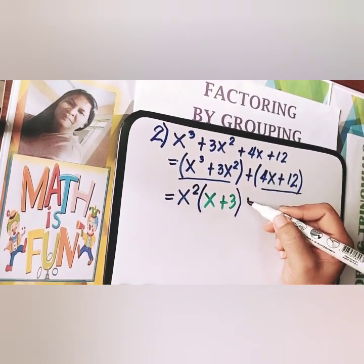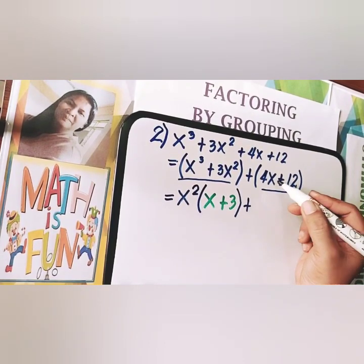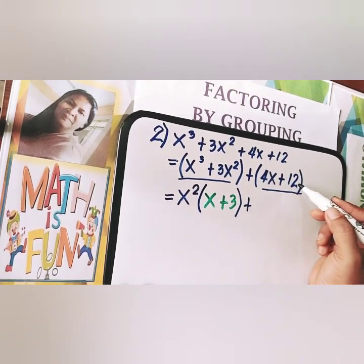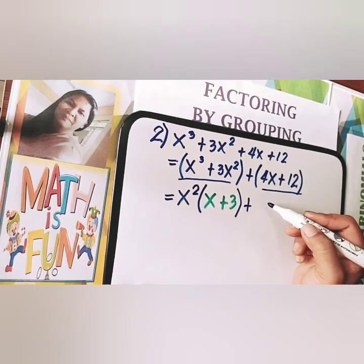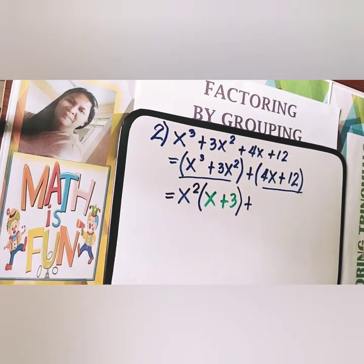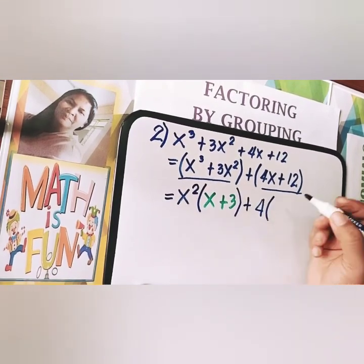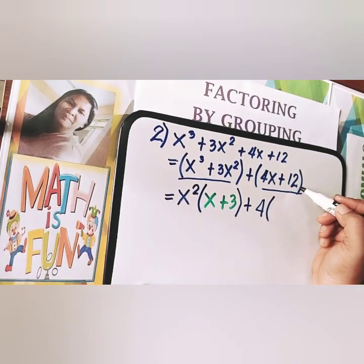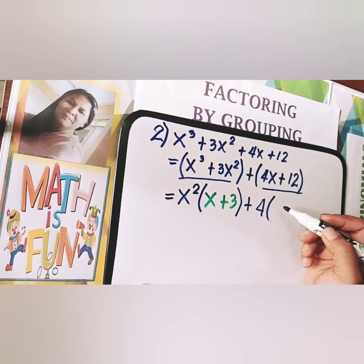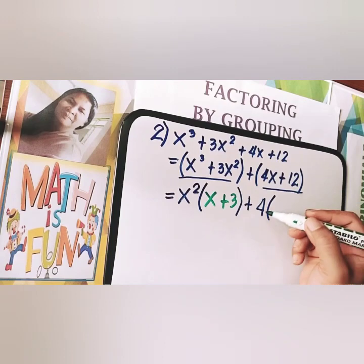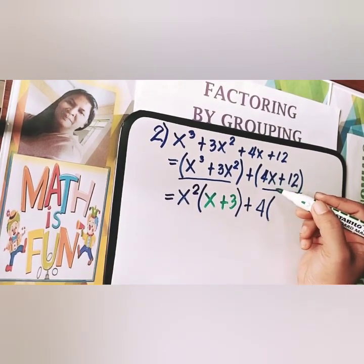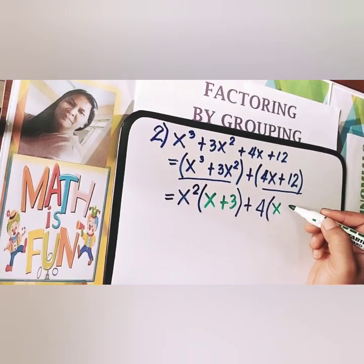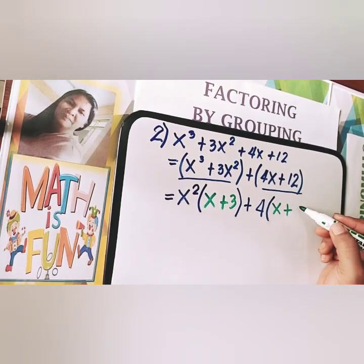Next, let's get the GCF of our second binomial, 4x plus 12. The GCF of 4 and 12 is 4. We don't need a variable in the GCF because the second term is a constant. Dividing each term: 4x divided by 4 is x, and 12 divided by 4 is 3. So the second group becomes 4 times (x plus 3).